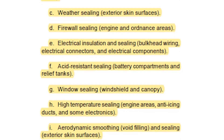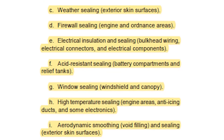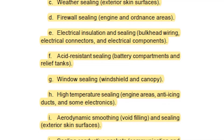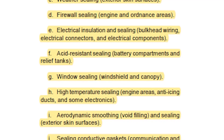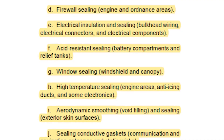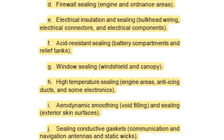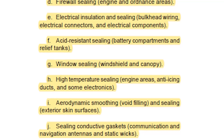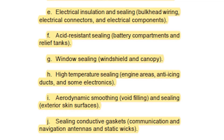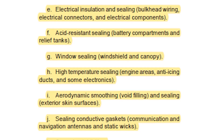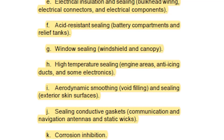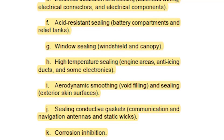Additional sealant purposes include: window sealing of windshields and canopies; high temperature sealing of engine areas, anti-icing ducts, and some electronics; aerodynamic smoothing, void filling and sealing of exterior skin surfaces; sealing conductive gaskets for communication and navigation antennas and static wicks; and corrosion inhibition.